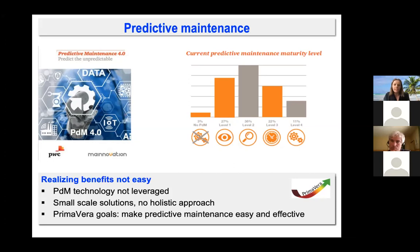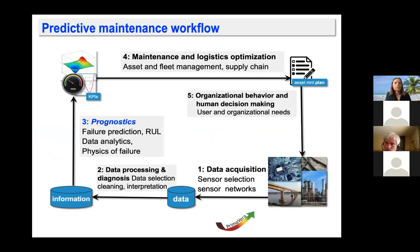Those are the ambitious goals of Primavera. On the right you see the current level of predictive maintenance maturity. Real predictive maintenance starts only at level three, where only 20% of companies currently are. In the Primavera project we cover the whole predictive maintenance workflow.